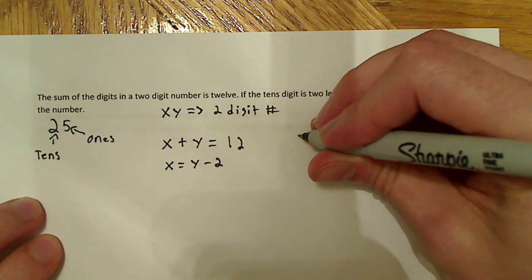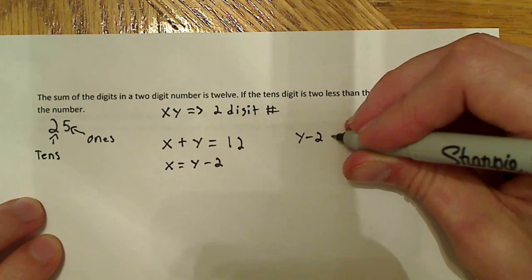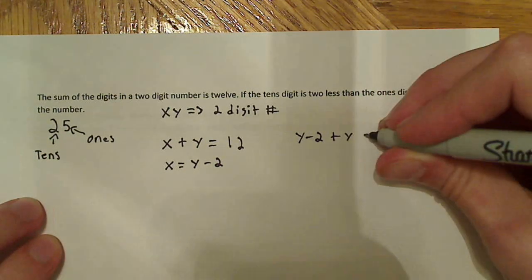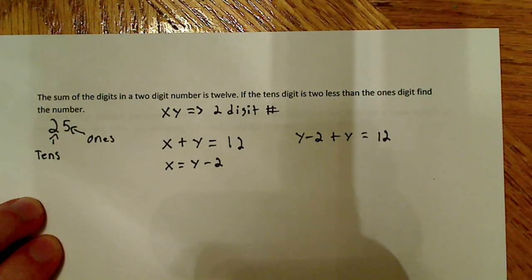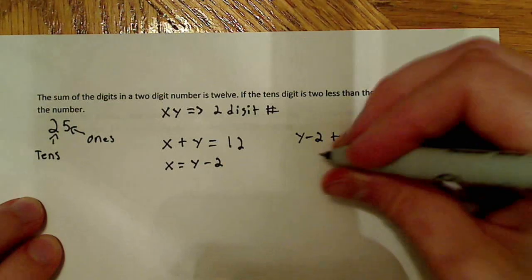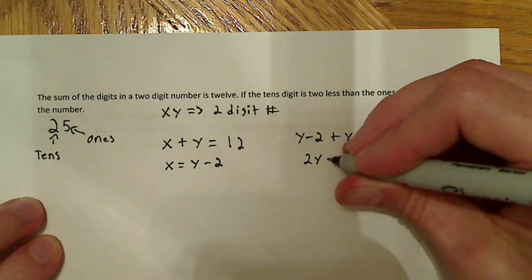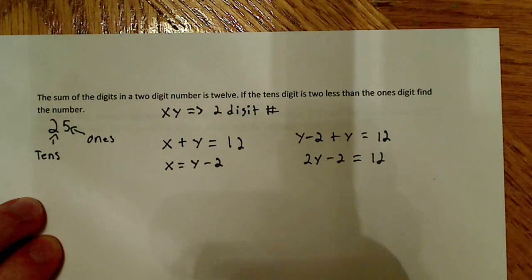So what I have here is x is equal to y minus 2 plus y, and that all equals 12. Now, do a little bit of algebra here. y plus y is 2y. So 2y minus 2 is equal to 12.